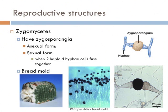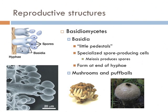Basidiomycetes are another group of fungi, and they can be differentiated from the other groups by their reproductive structures known as basidia. Basidium literally translates to little pedestal, and that's what they look like — little pedestals. They're specialized spore-producing cells that form at the end of the hyphae. In these cells, meiosis occurs making haploid cells — cells with a single set of chromosomes. Many of the commonly known fungi are basidiomycetes: mushrooms, puffballs, smuts, and rust are other examples of basidiomycetes.